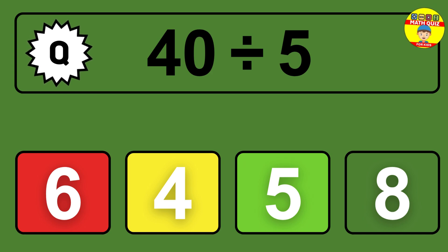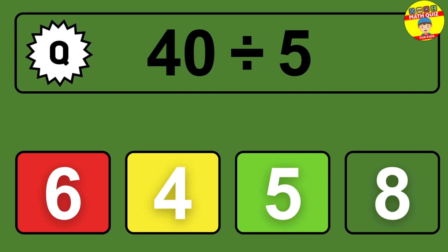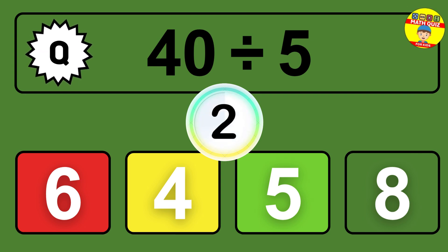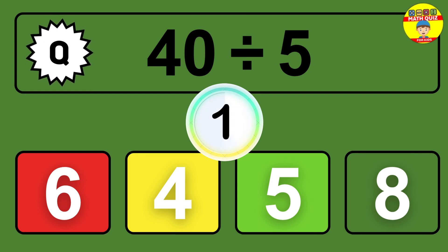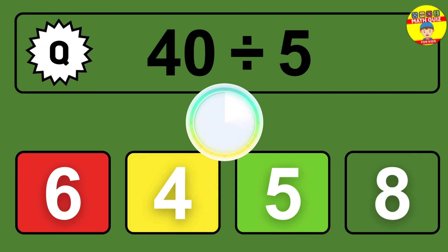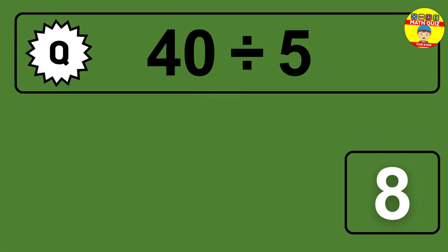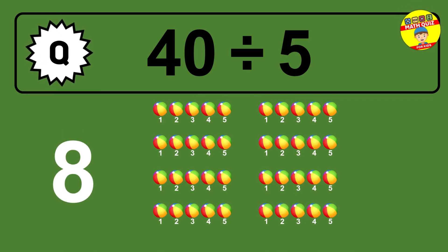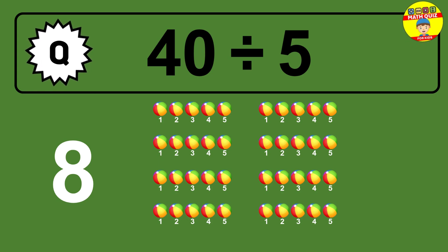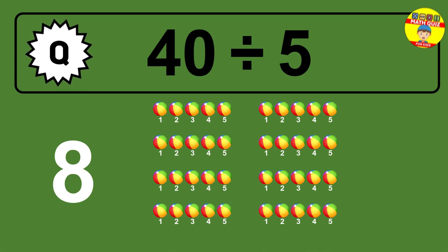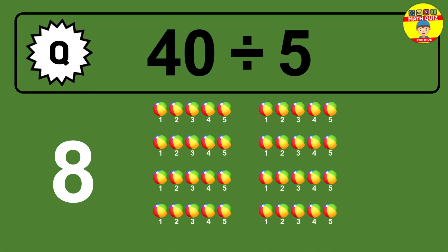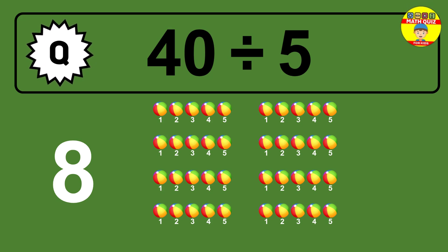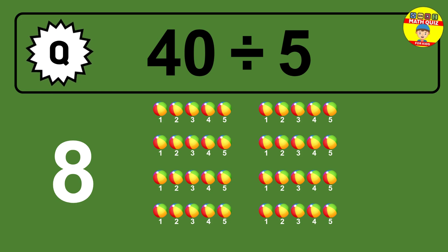40 divided by 5 — time to think. Let's go to the solution. Divide the number 40 by 5. Each group contains 5 units, so dividing 40 by 5 results in 8 equal groups. Thus, the result is 40 divided by 5 equals 8.